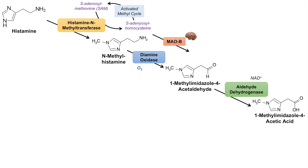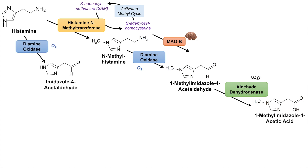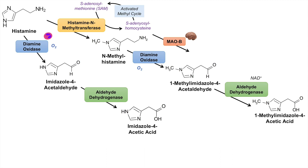There is also another pathway by which histamine can be metabolized: being directly acted on by diamine oxidase to form imidazole-4-acetaldehyde. Again, this enzyme requires oxygen as a cofactor and is also known as histaminase. Importantly, diamine oxidase can be released from eosinophils into circulation to help metabolize circulating histamine. Once we have imidazole-4-acetaldehyde, it can be acted on by aldehyde dehydrogenase to form imidazole-4-acetic acid, which also requires NAD+ as a cofactor.